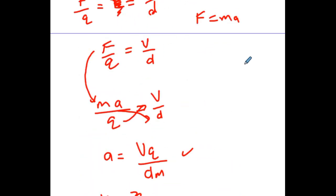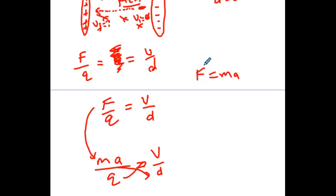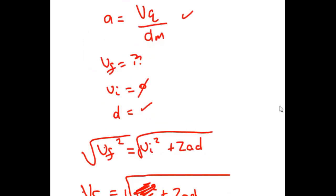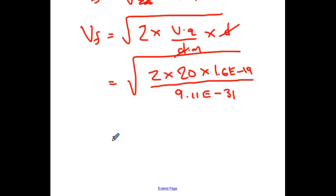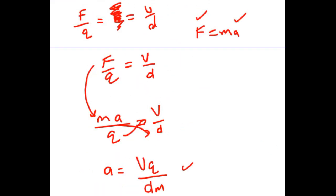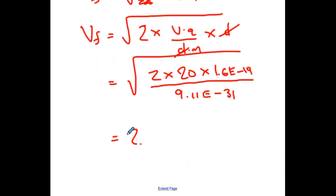You could also solve for every single variable along the way — solving for the force, then the acceleration, then each piece step by step. If you want to use numbers along the way that's fine, but it's not as efficient. I definitely recommend getting comfortable manipulating formulas without having to type numbers in, so you can put all the numbers in on the last step. Going 2 × 20 × 1.6 × 10⁻¹⁹, divided by 9.11 × 10⁻³¹, then taking the square root, gives a final velocity of 2.7 × 10⁶ meters per second.